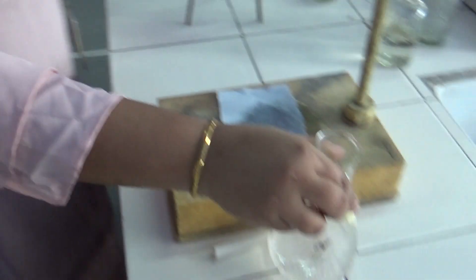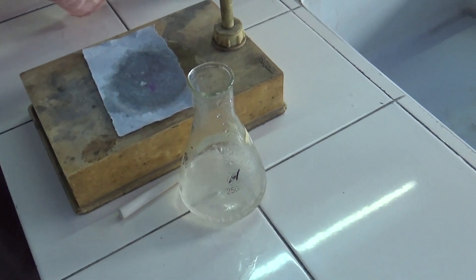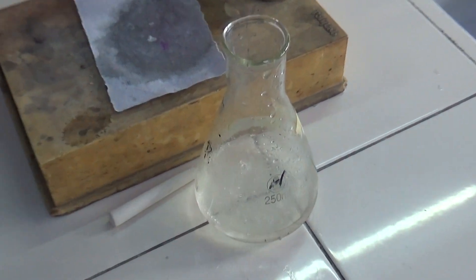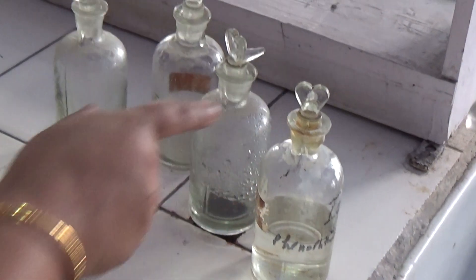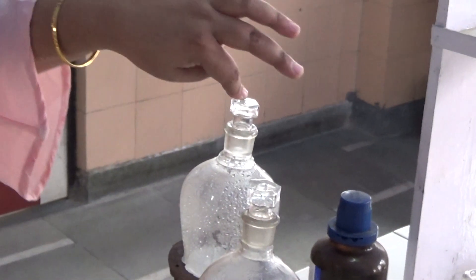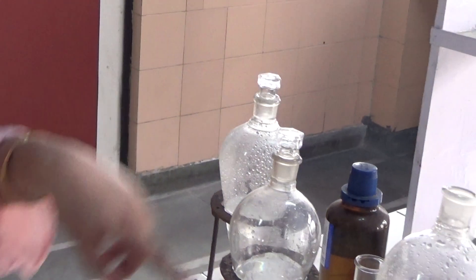Similarly, you will be doing the titration for both the other reagents: 1 gram, 1.5 grams, and 2 grams of benzoic acid. Same titration procedure.